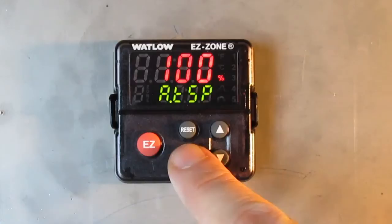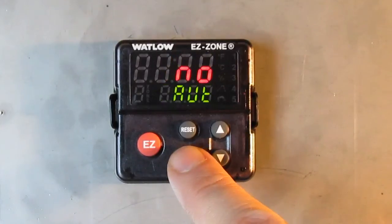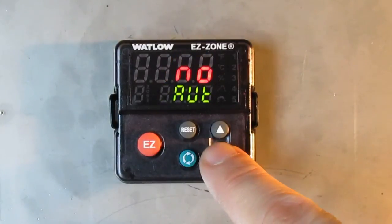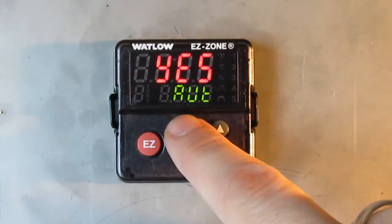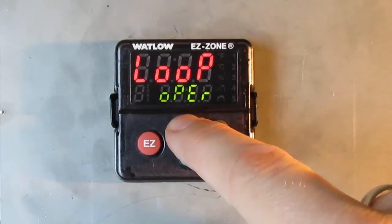Then you go and press the green button one time. You'll see auto. Press the down arrow one time and you press the reset button 3 times.